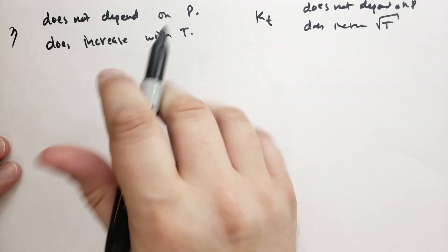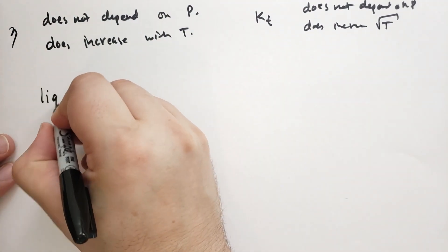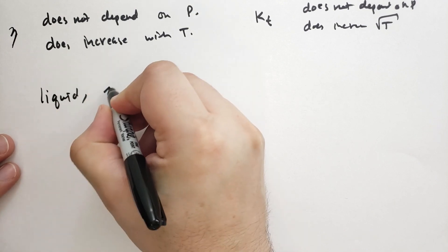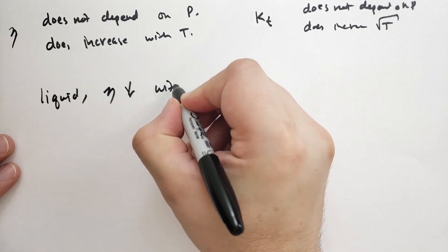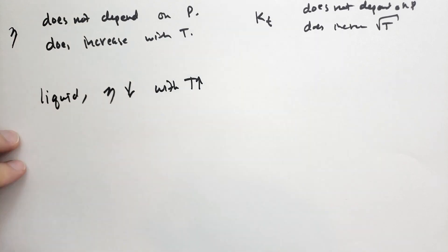Calculating that it increases with T, you'll note for a liquid, eta decreases with T increasing. So as you lower the temperature of a liquid, it becomes more viscous, and as you raise it, it becomes less viscous. It's like the opposite of the ideal gas.